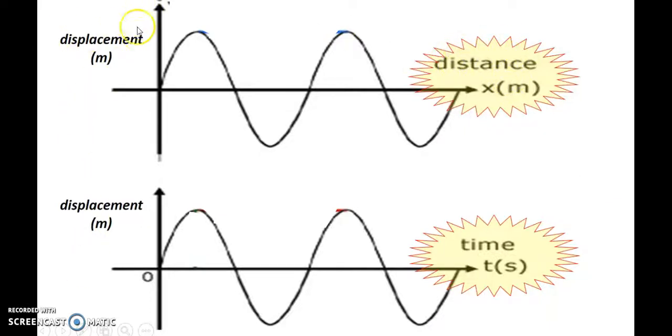They are displacement graphs. It shows the distance the particle is from the rest position, but the horizontal axis shows you, the top one shows you the distance from the point of disturbance. And the next one is actually the time.